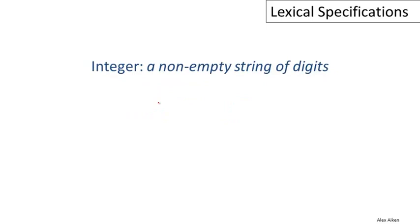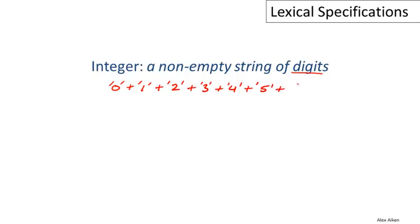Now let's consider a slightly more complicated example. Let's think about how to specify the integers, which we want to be the non-empty strings of digits. The first problem is to write out what a digit is. A digit is just any of the individual characters 0 through 9. We already know how to write out single-character regular expressions, and it's just a union of 10 of those. So that's a regular expression for the set of strings corresponding to all the single digits.